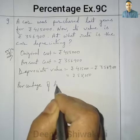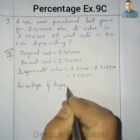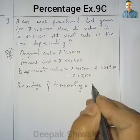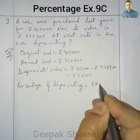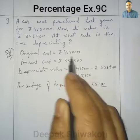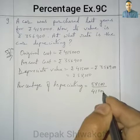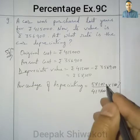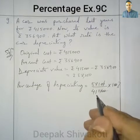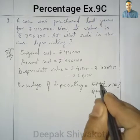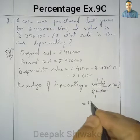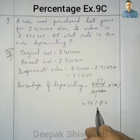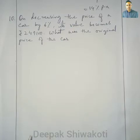Now percentage of depreciating is equal to depreciated value — that is 58,100 — divided by the original cost 4,15,000, into 100 percent. Cancelling zeros and dividing, we get 14 percent per annum. That is, the value of the car is decreasing yearly by 14 percent.